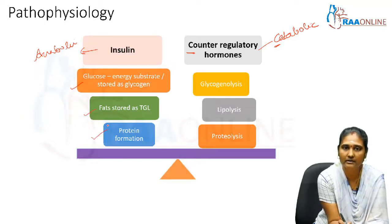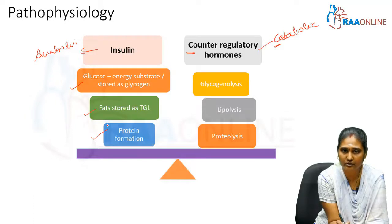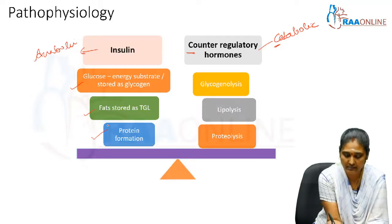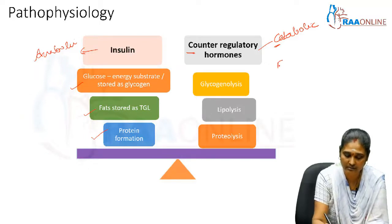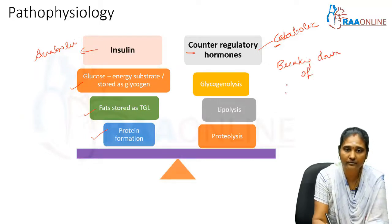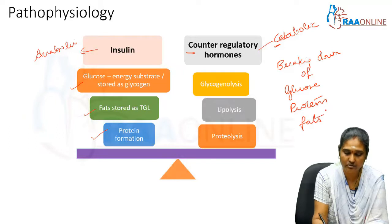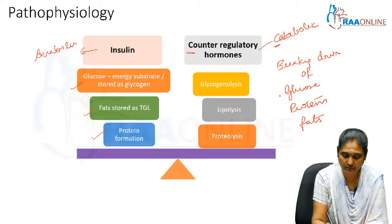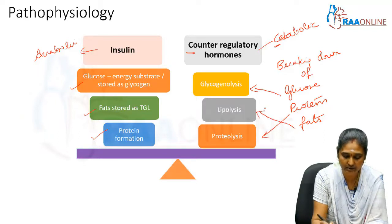On the other hand, counter-regulatory hormones like glucagon, growth hormone, and epinephrine are mainly involved in the breakdown of glucose, fats, and proteins. These processes are termed glycogenolysis for glucose breakdown, proteolysis for proteins, and lipolysis for fats.